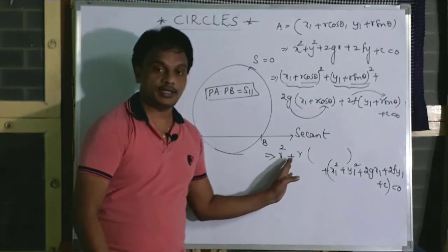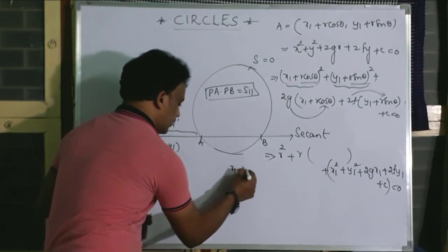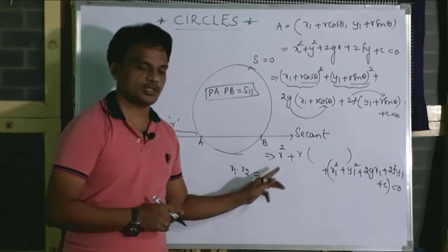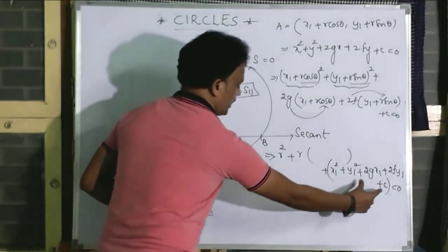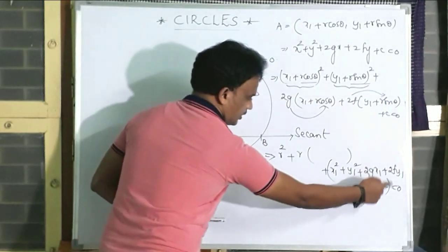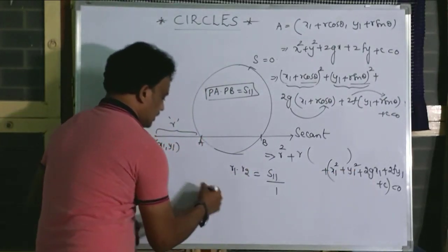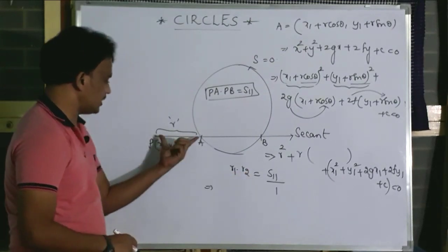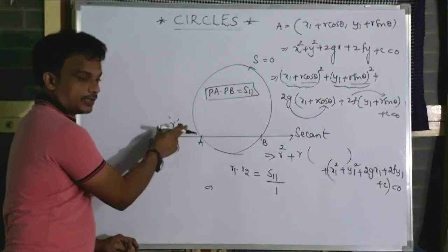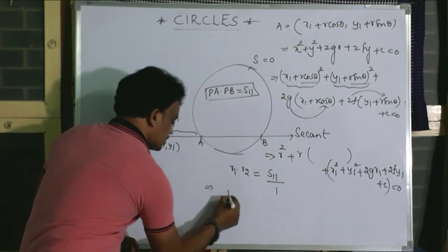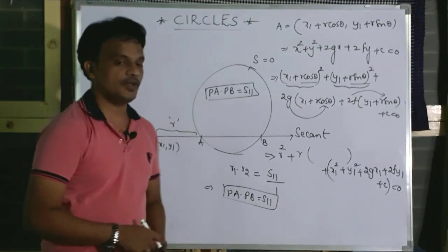This is a quadratic equation in R. For this quadratic equation, I am going to find the product of roots R1 and R2. Product of roots equals constant divided by coefficient of R², which is S11 divided by 1, giving S11. R1 and R2 are algebraic distances, where R1 means PA and R2 means PB. So PA into PB equals S11. That is the very important result.